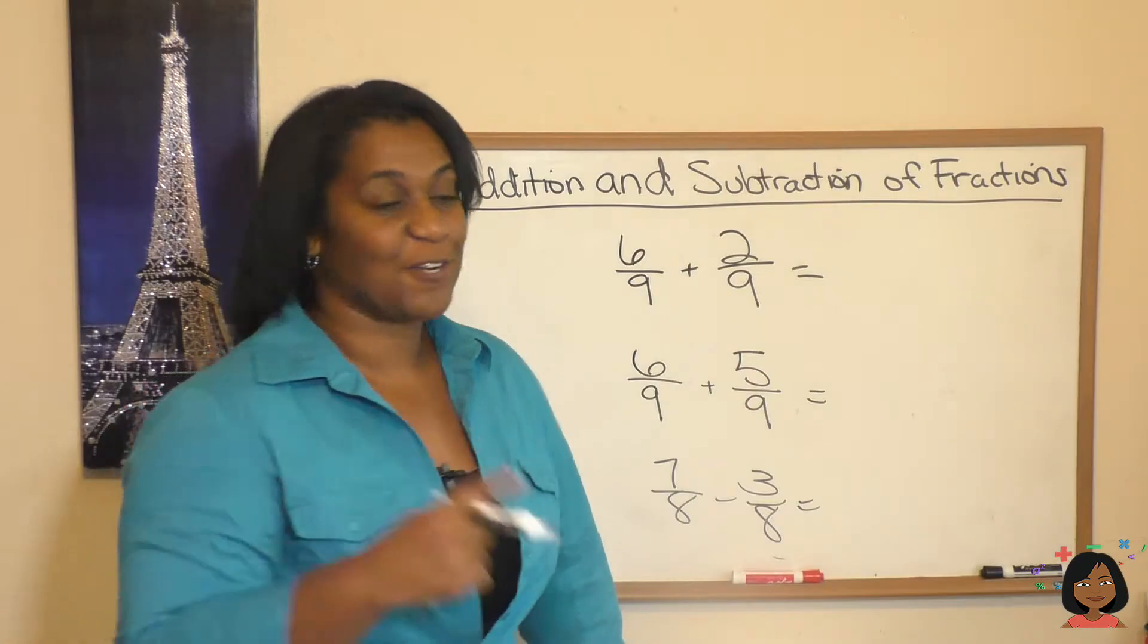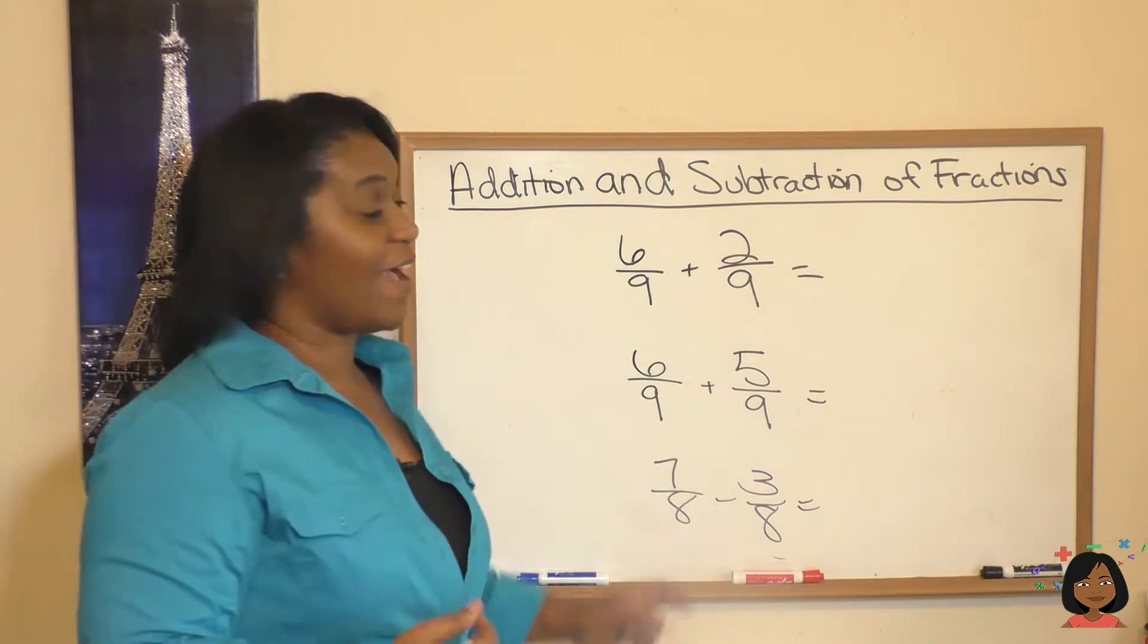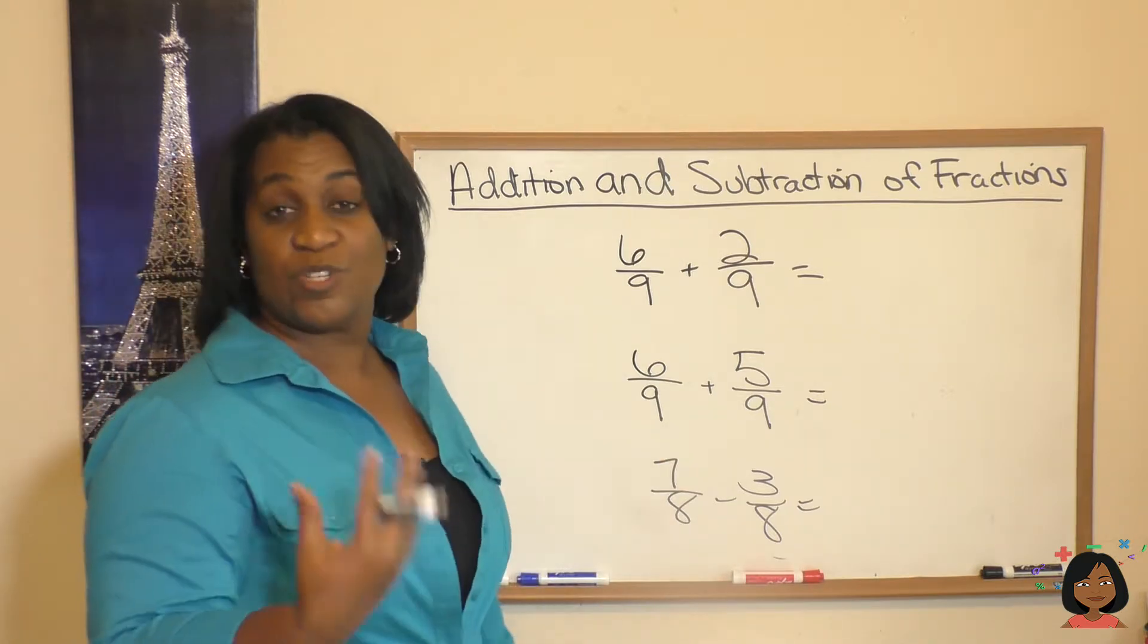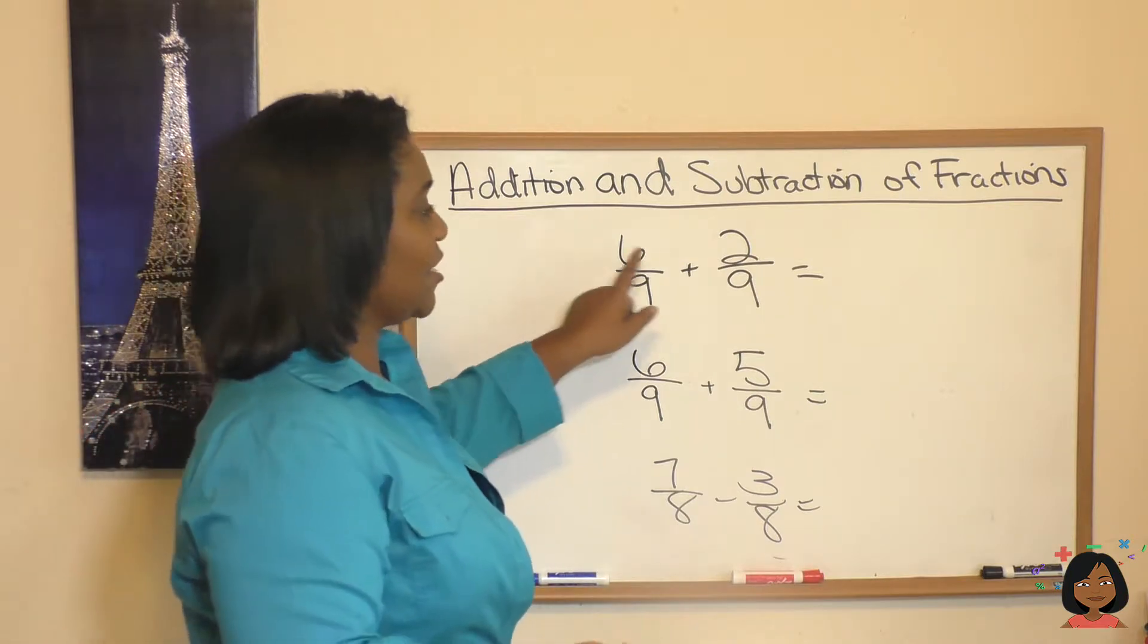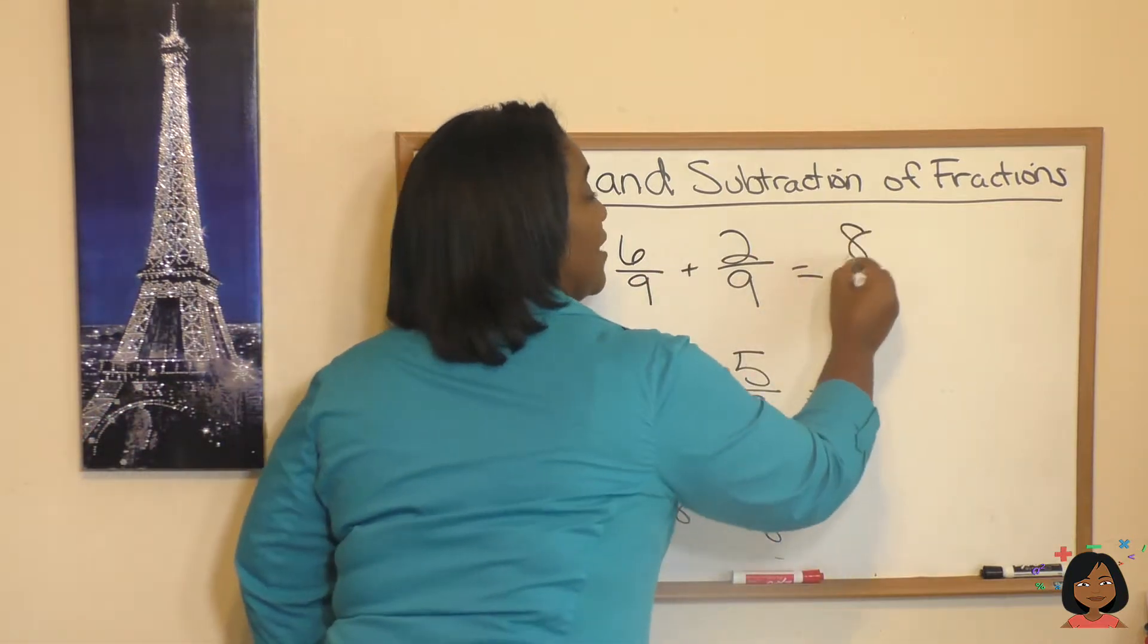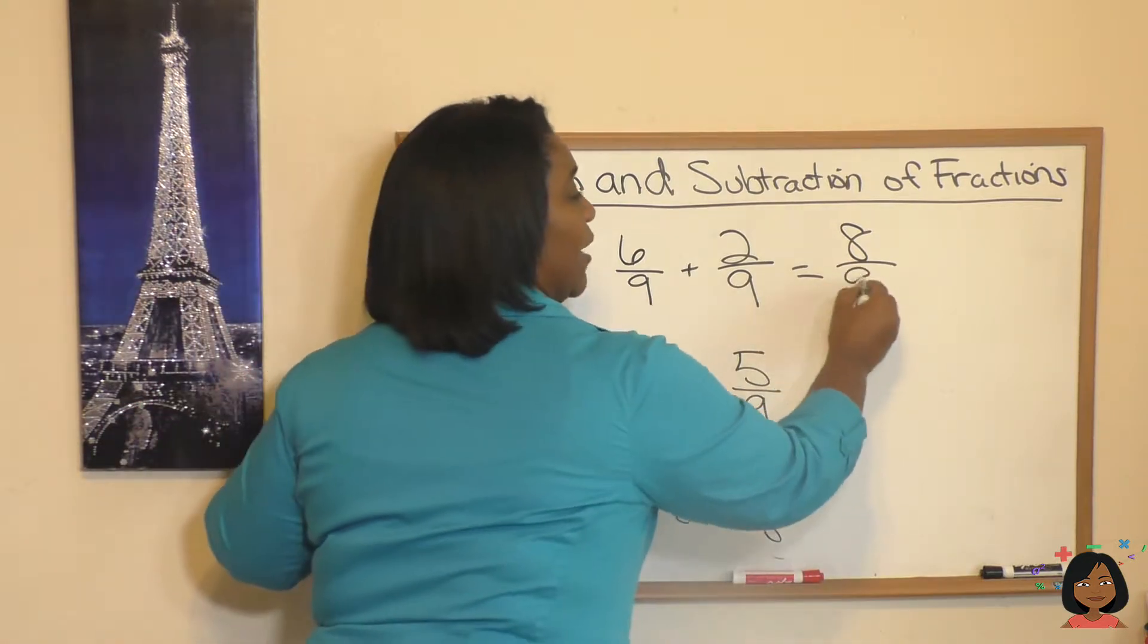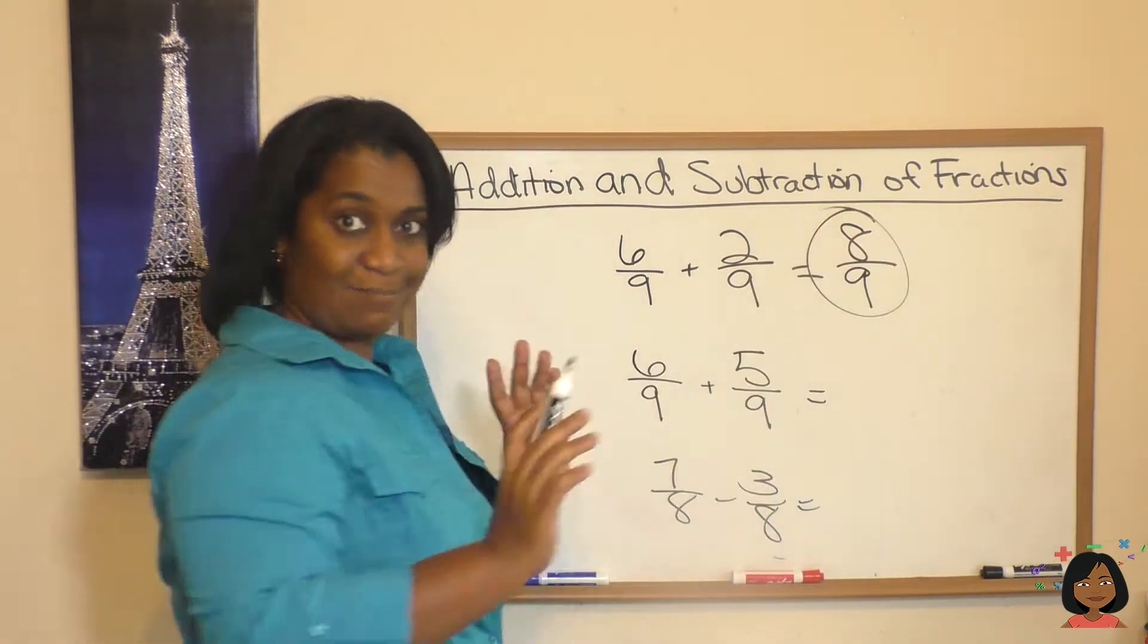Let's do it. Take our first problem. We've got 6 ninths plus 2 ninths. We have the same denominator, which means when we have the same denominator, we can go ahead and add the numerators. 6 plus 2 ninths. 6 plus 2 is 8. And our denominators stay the same. Our answer is 8 ninths.